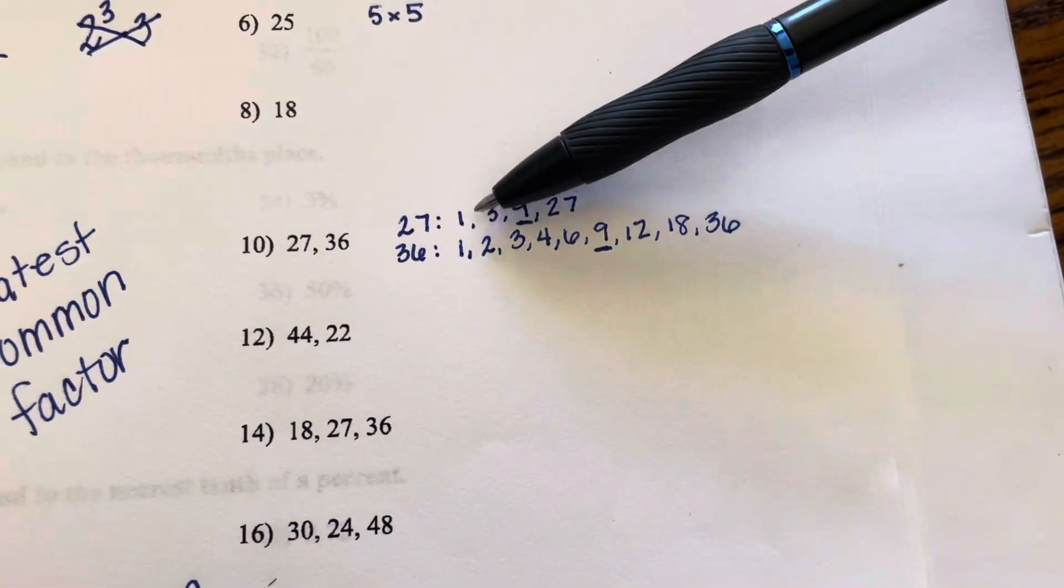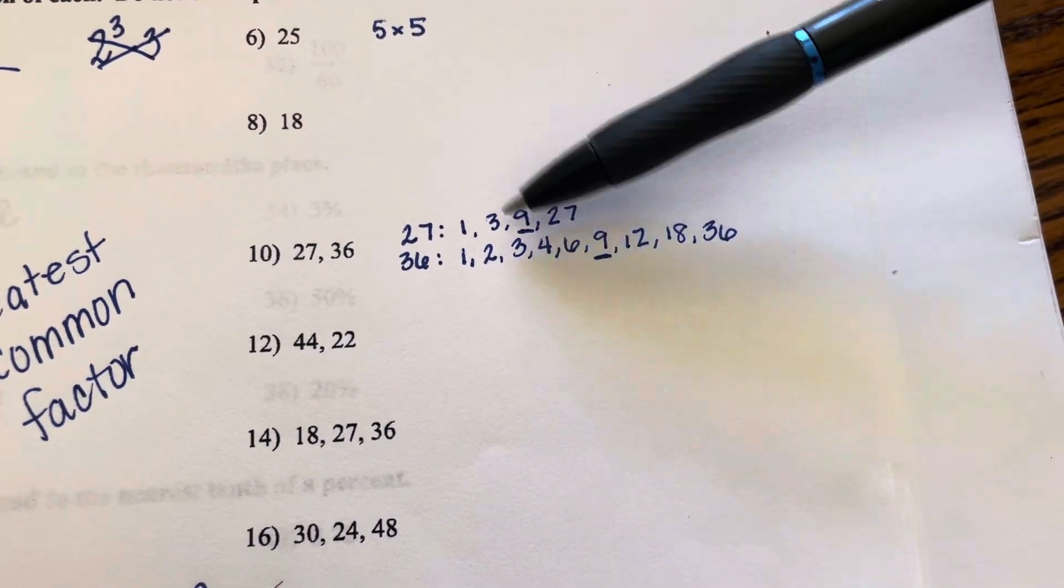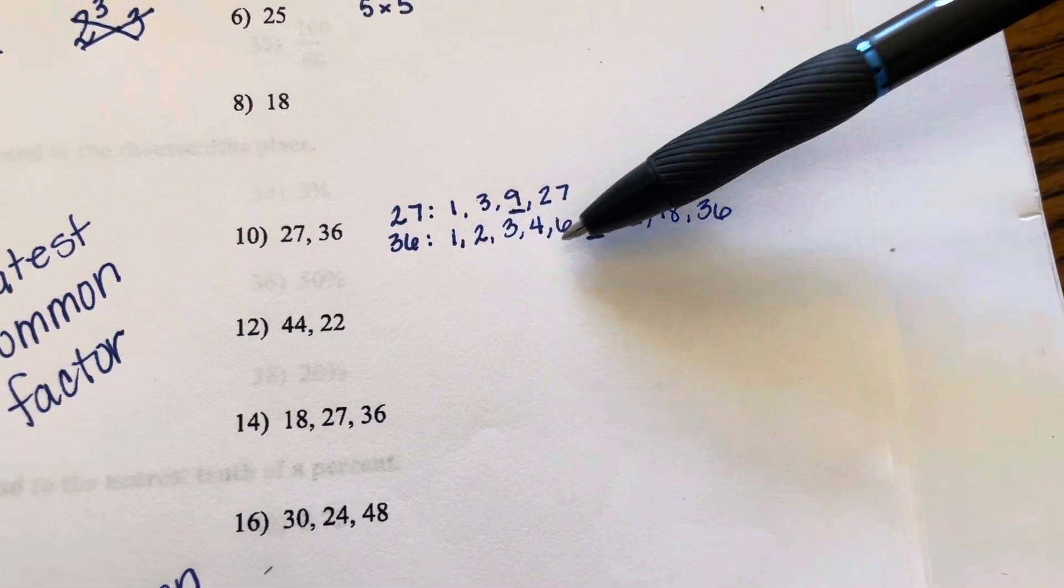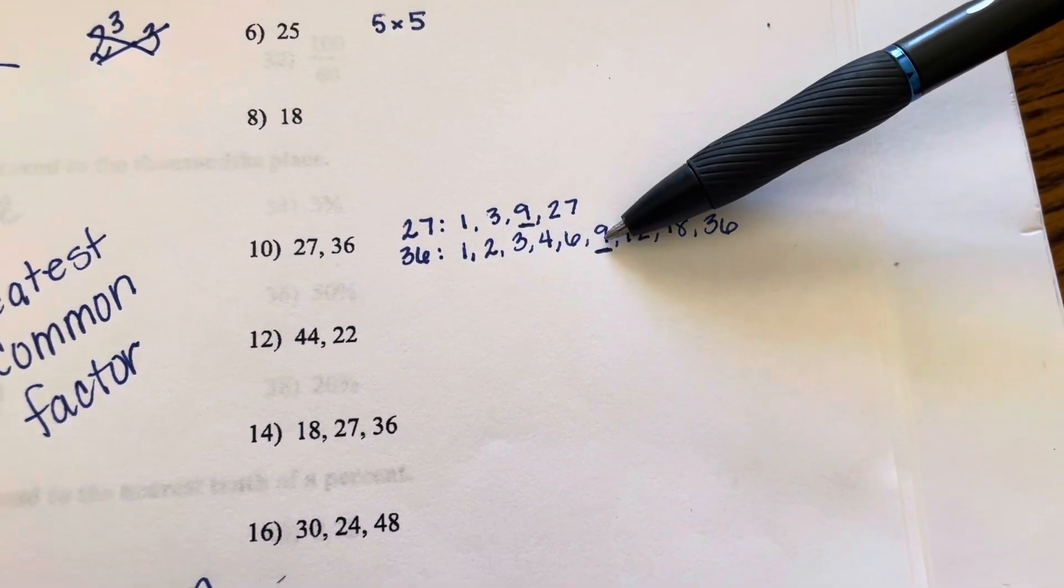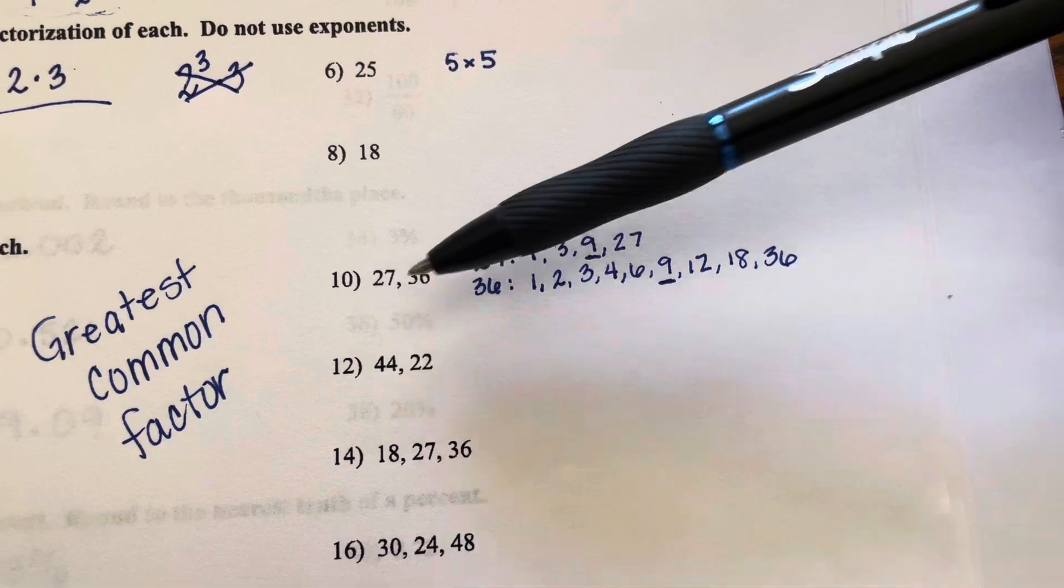Now, we see that they share 1 and they share 3, but the greatest number that they share is 9. Therefore, 9 is the greatest common factor of these two numbers.